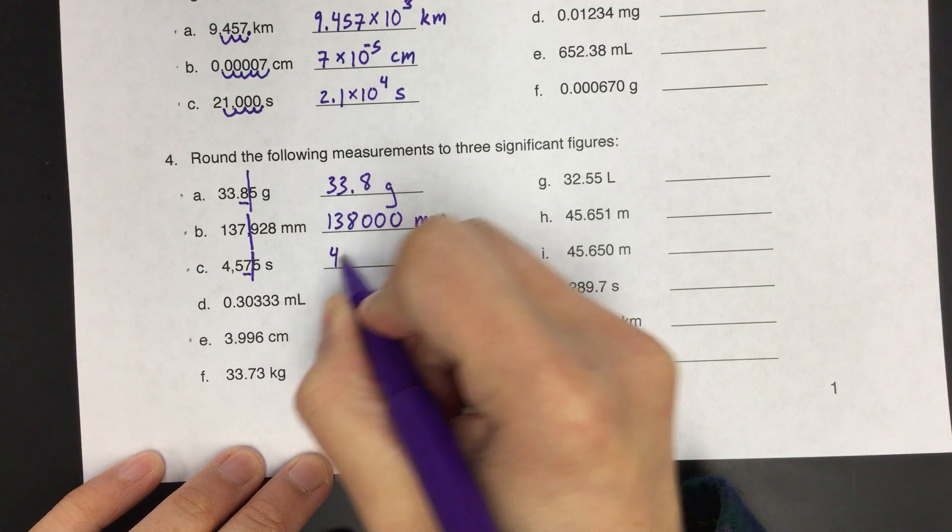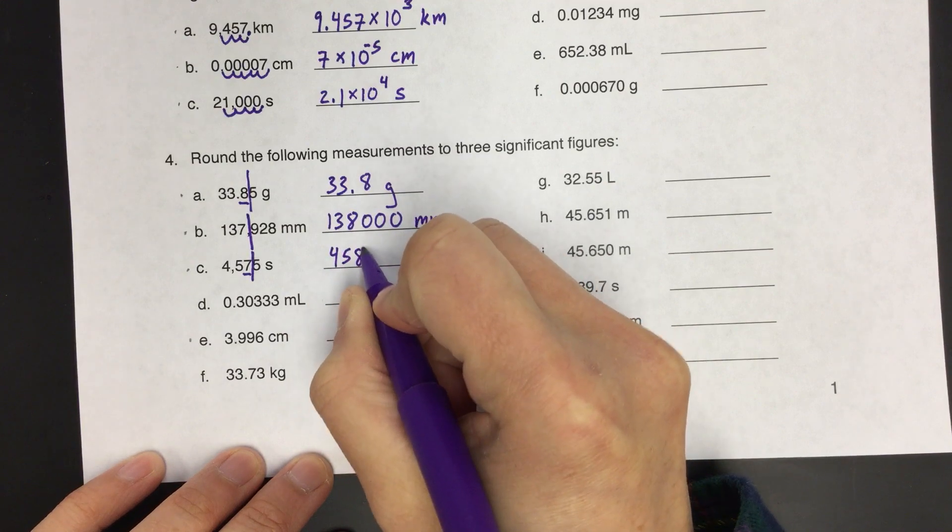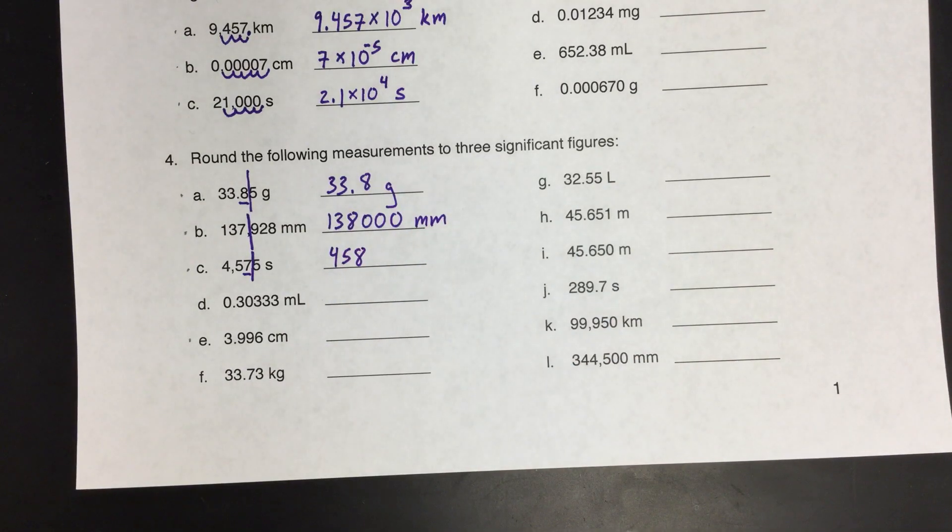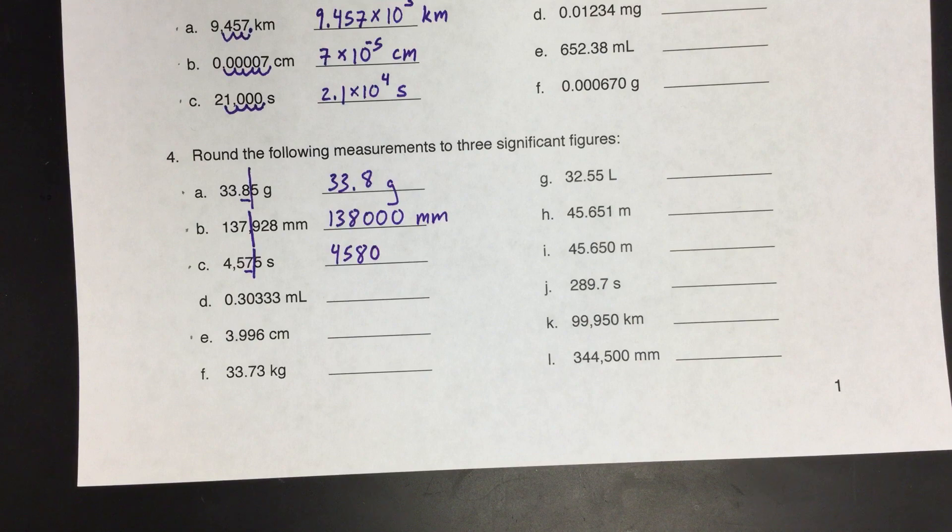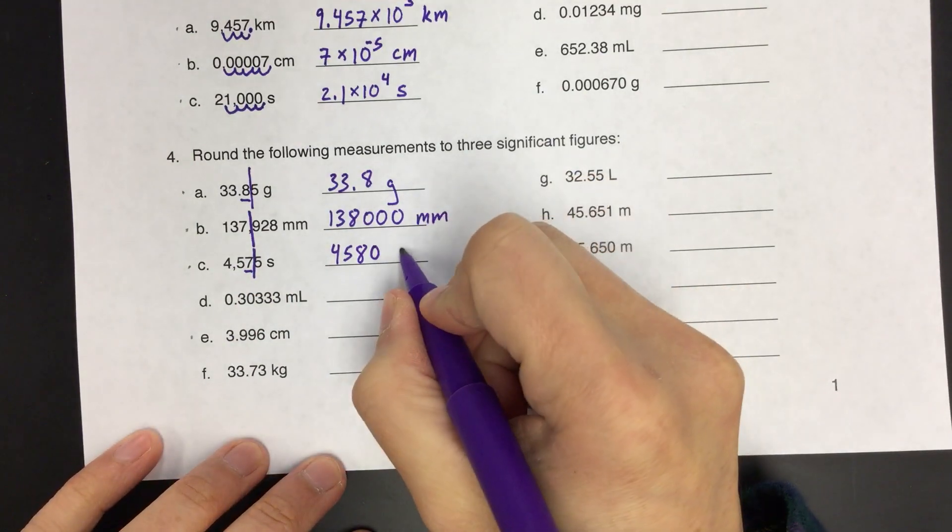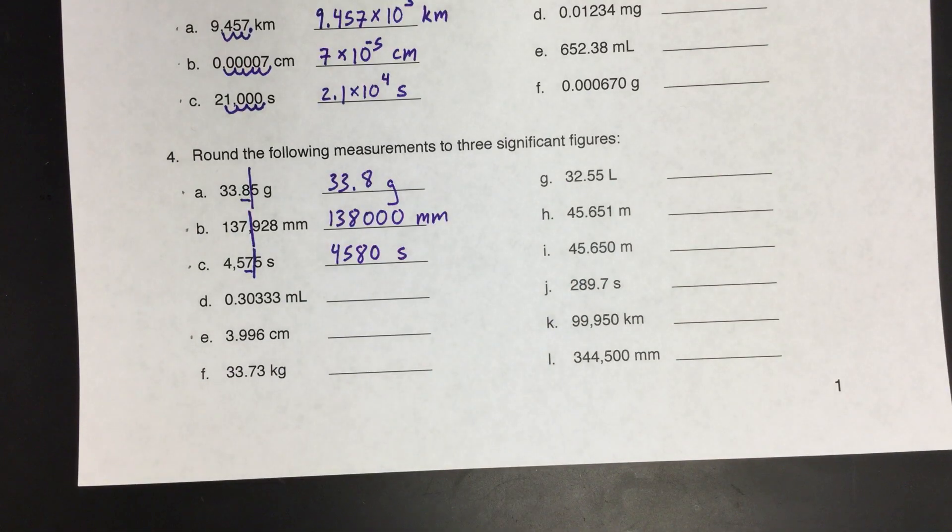So the 7 means we round up. So this turns into 4, 5, 8. And again, similar to the last one, you don't stop there. You have to add a 0 as a placeholder to make sure that the size of this number is the same as the size of the number you started with. And the units are seconds. Okay. So again, we had to use the odd-even rule. Let's do a couple more.